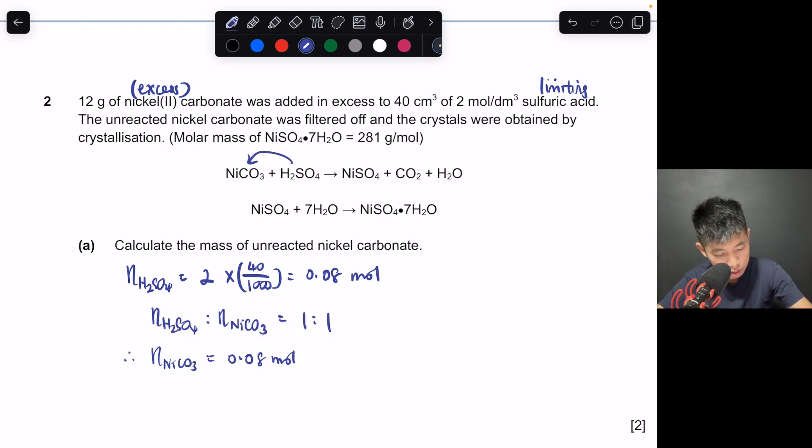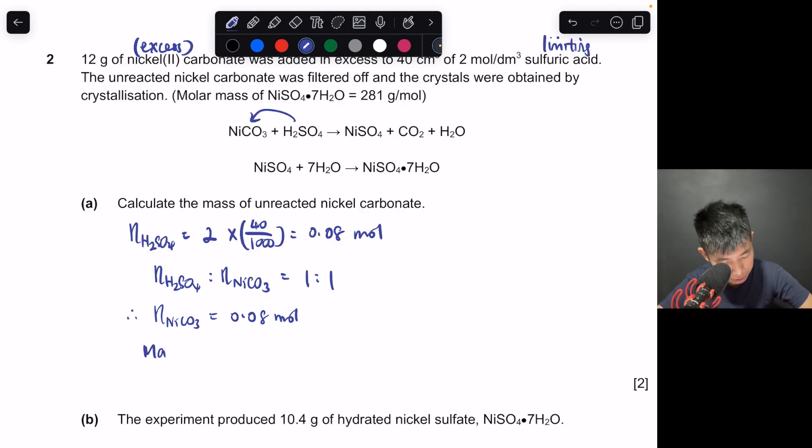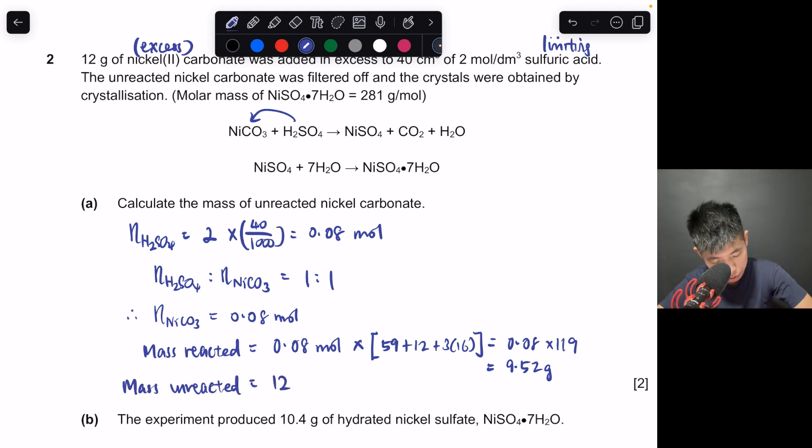We have 0.08 mol. So given this is 1 is to 1, we can just write it like that. The number of moles of nickel carbonate should also be 0.08 moles. Mass reacted times your MR, which is 59 + CO₃, 9.52 grams reacted. So mass unreacted is your original 12 minus 9.52 grams, which is 2.48 grams. 3 significant figures.